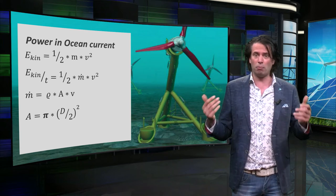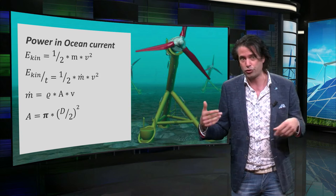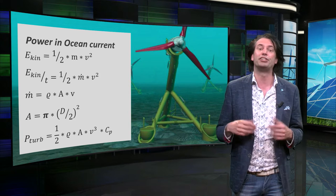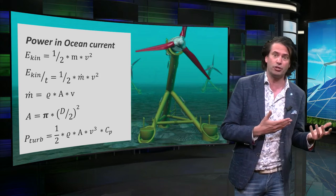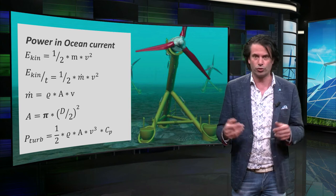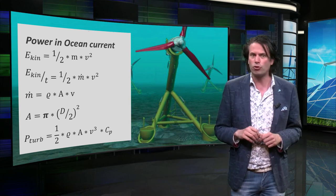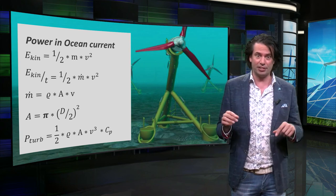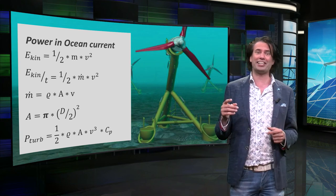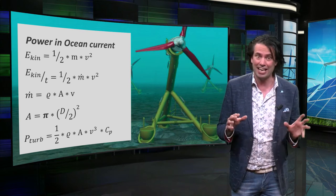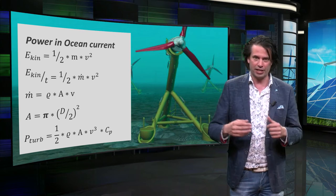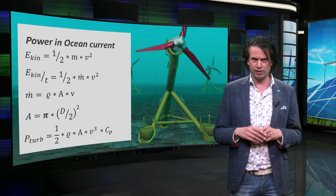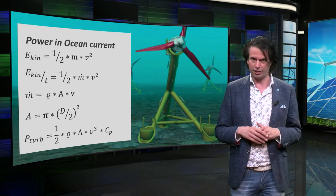We combine these three formulas with the power coefficient of the turbine to find the effective power. The power factor defines the percentage of the energy the turbine can harvest from the kinetic energy in the ocean current at certain conditions. The big difference in outcome compared to a wind turbine is caused by the difference in fluid density. Water is more than 800 times as heavy as air, so it contains a lot more kinetic energy at the same speed. Downsides of underwater turbines are corrosion and algae growth.